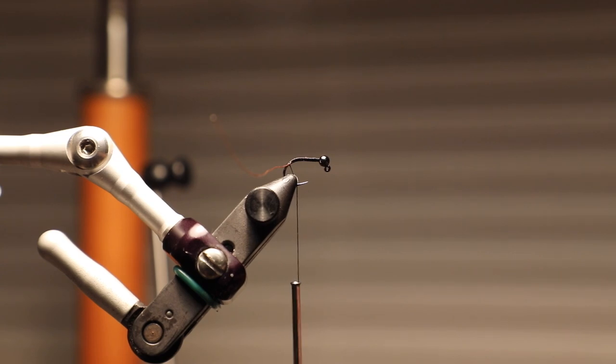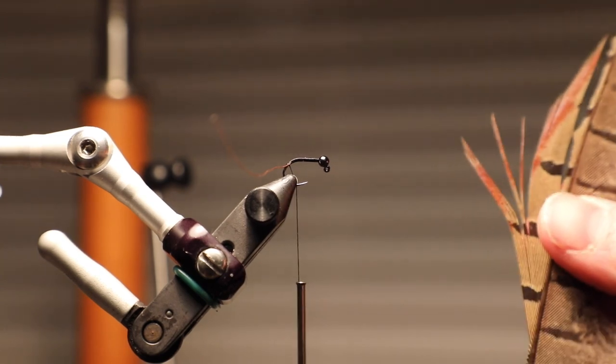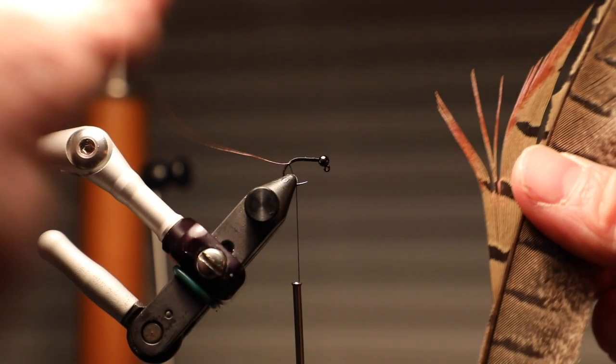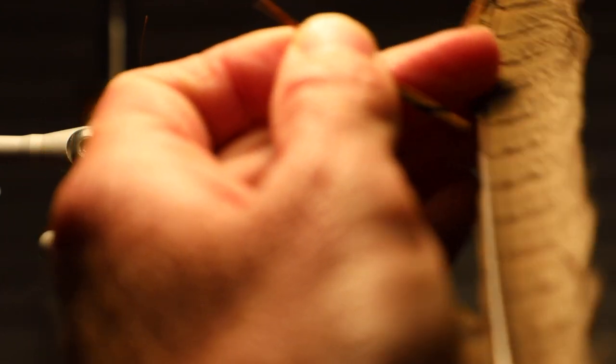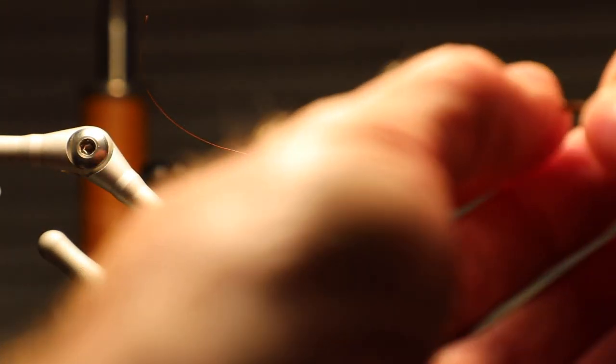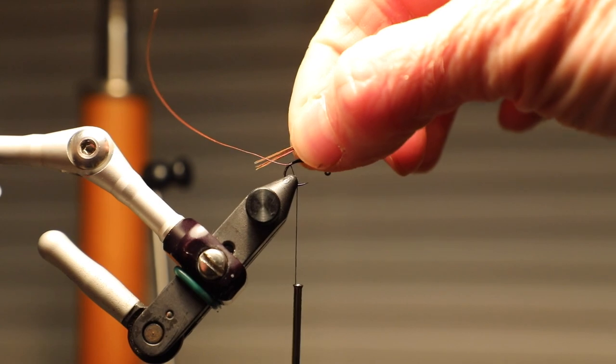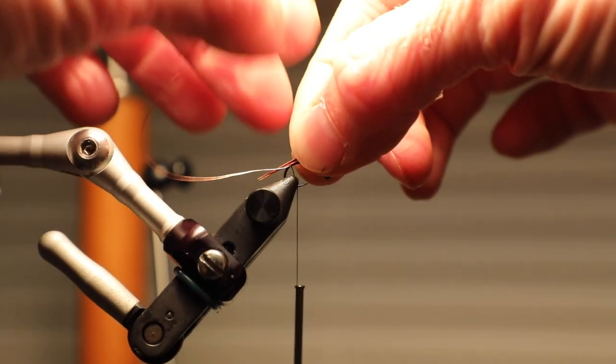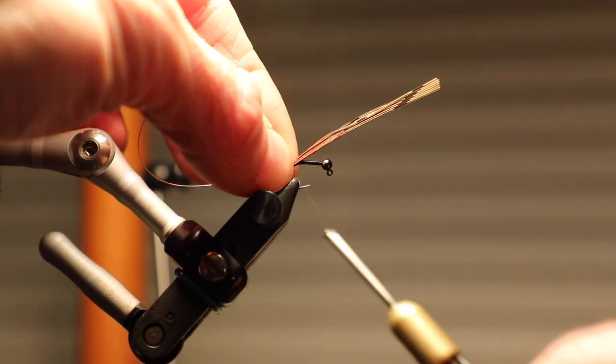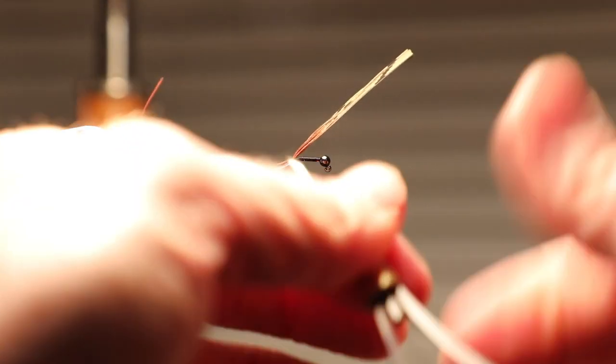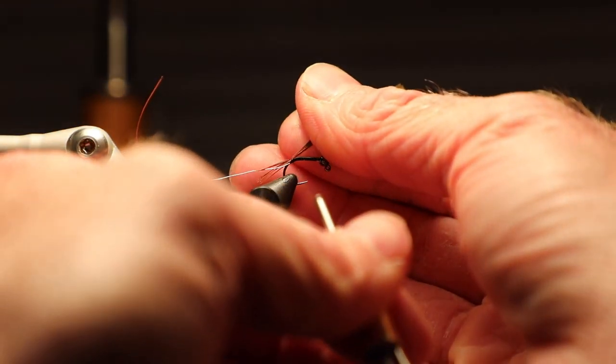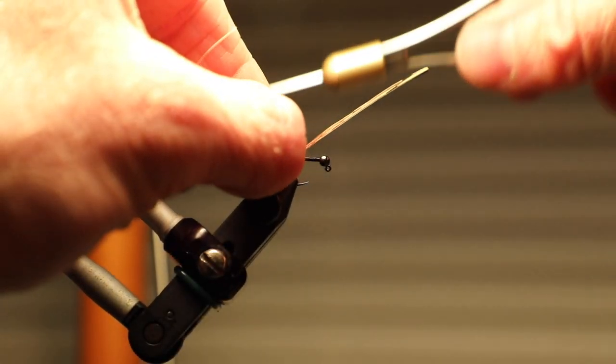Got my wire in. I'm ready for my pheasant tail. So I've got a nice clump of pheasant tail here. You can see I'm gonna take out a nice section there, maybe five or six fibers, and gonna tie that in for a tail. Probably about the width of the gap of the hook. Maybe a little less actually, since this is a wide gap hook being a jig.